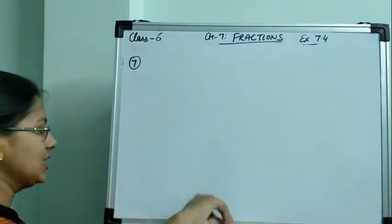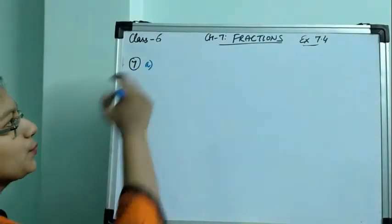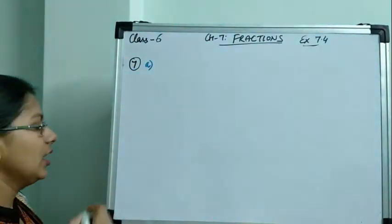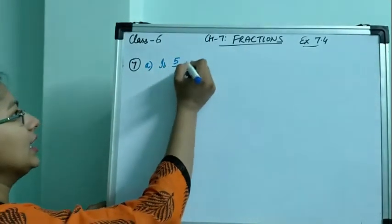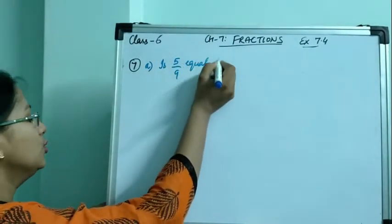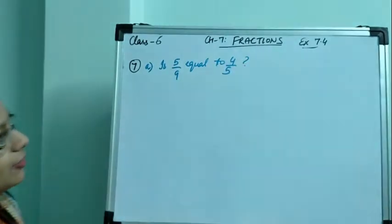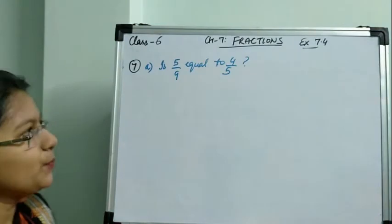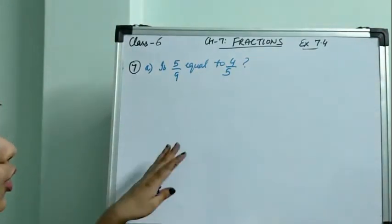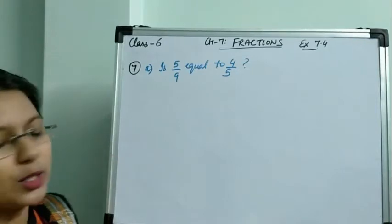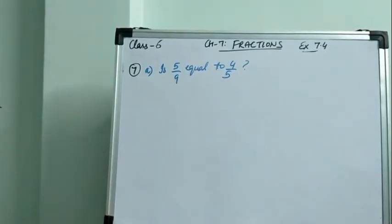Question number 7 is: find answers to the following. A few parts are given and we have to find their answer. Part A is: is 5 by 9 equal to 4 by 5? Simply by observation, we can say that no, 5 by 9 is not equal to 4 by 5. But how will we prove it?